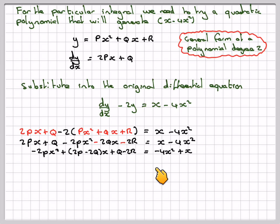And that's going to be equal to minus 4x squared plus x. So minus 2p will be equal to minus 4, equating the coefficients. Minus 2p is equal to minus 4, which gives that p must be 2.